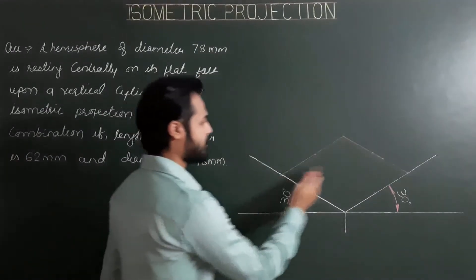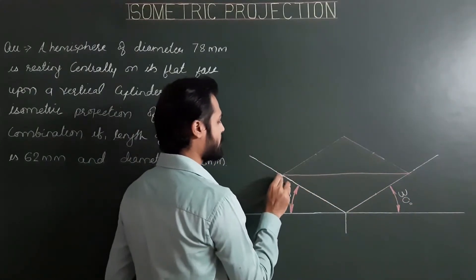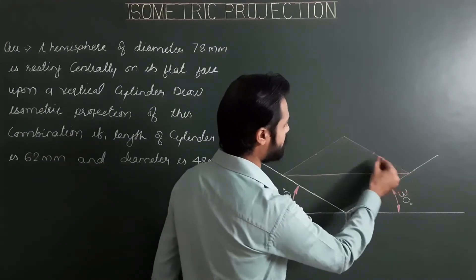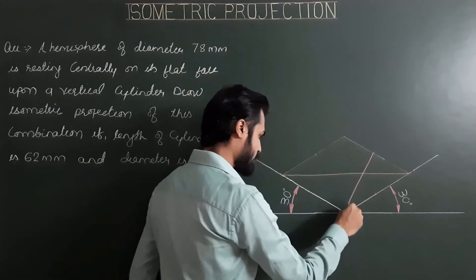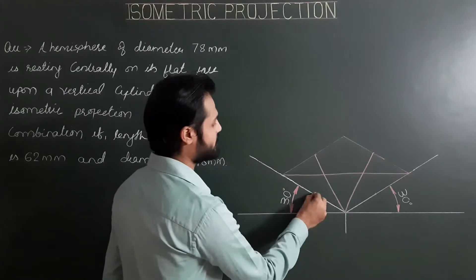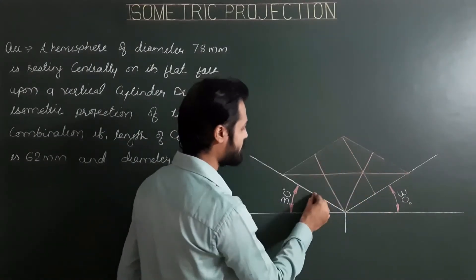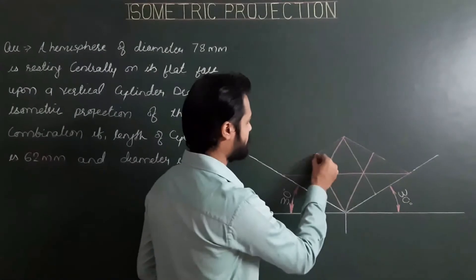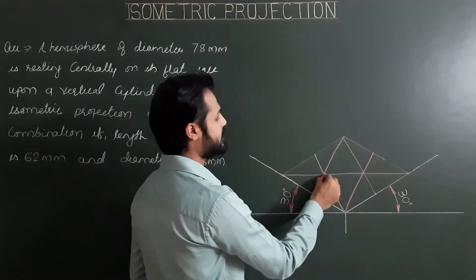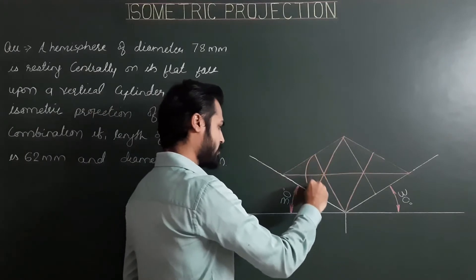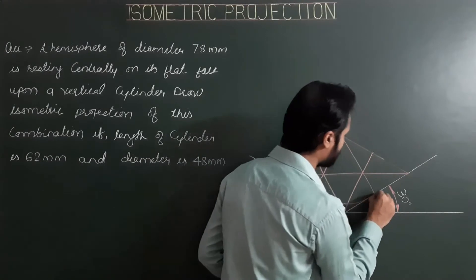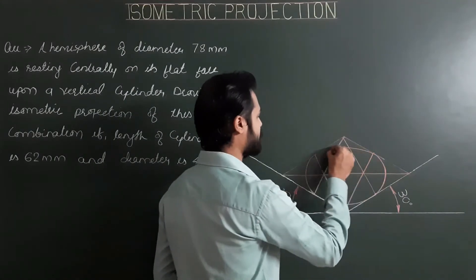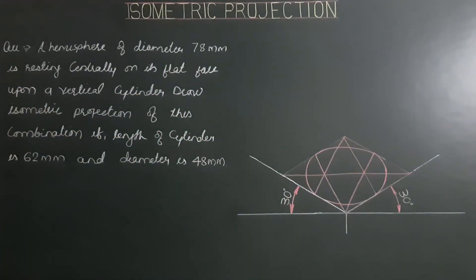Instead of joining opposite corners or drawing diagonals, the next step is from opposite midpoints drawing lines towards the opposite corner. For the second set, again repeating the process. In the last step, we draw the circular portion of the base using the four-center method — first center with first radius, second center with second radius, third center with third radius, fourth center with fourth radius. The circular piece is ready.